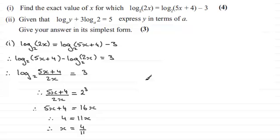Okay, well that's part 1, let's just border that off and we can now move into part 2. And for part 2, we're given that logₐ(y) + 3logₐ(2) = 5, and we're asked to express y in terms of a. Give your answer in its simplest form for three marks.